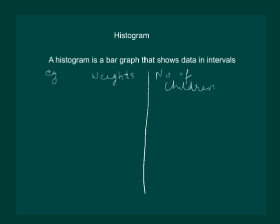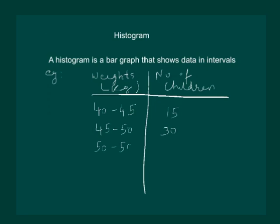Then suppose we find out that children weighing from 40 to 45 kg are 15, between 45 to 50 kg are 30 children, weighing from 50 to 55 kg are 40 children, weighing from 55 to 60 kg are 35.